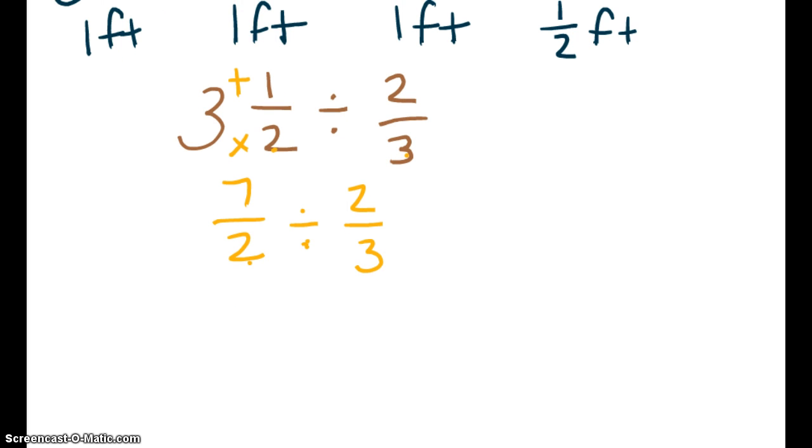Now when you're dividing, you are going to multiply by the reciprocal. So 7 halves remains the same. We change divide to multiply and the reciprocal of 2 thirds is 3 halves. We multiply straight across and we get 21 halves. Oh, not 21 halves, 21 fourths.